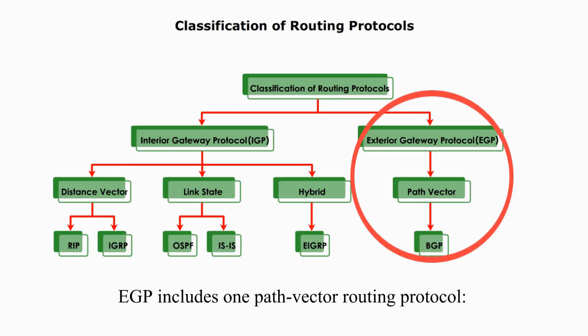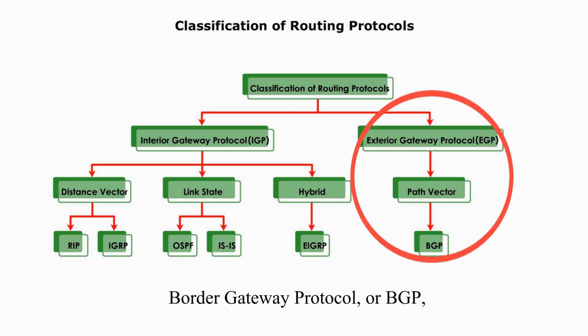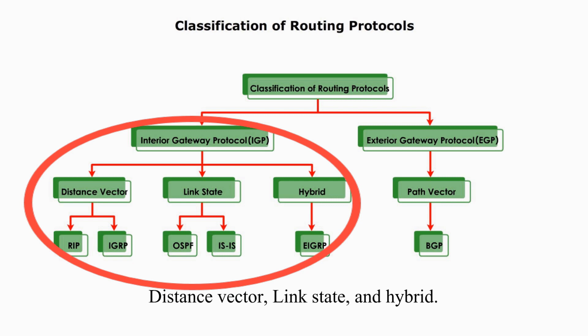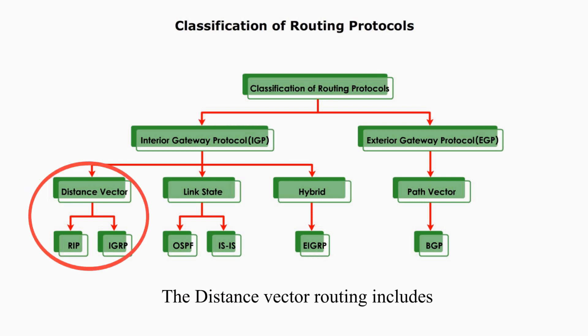EGP includes one path vector routing protocol, Border Gateway Protocol, or BGP, used by AS border routers. IGP includes three different types of routing algorithms: distance vector, link state, and hybrid. The distance vector routing includes RIP, Routing Information Protocol,